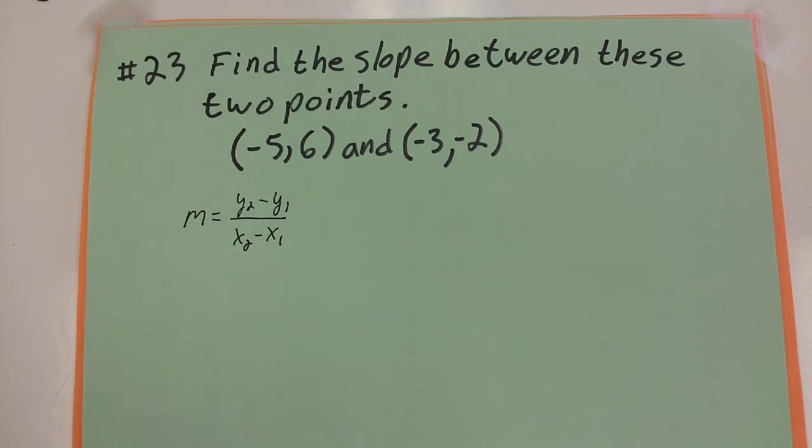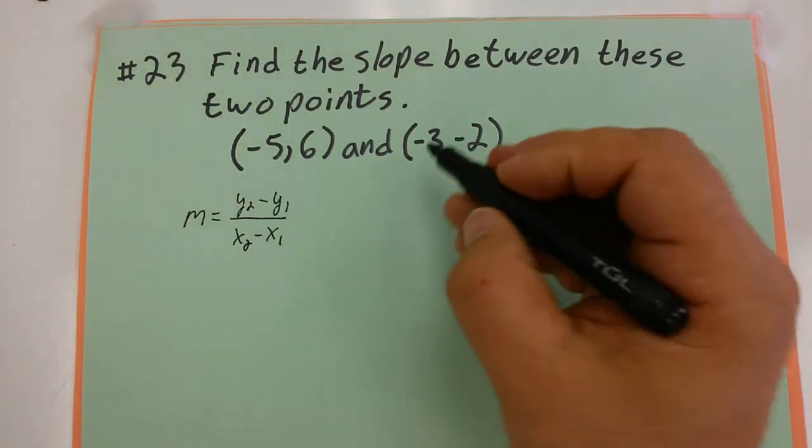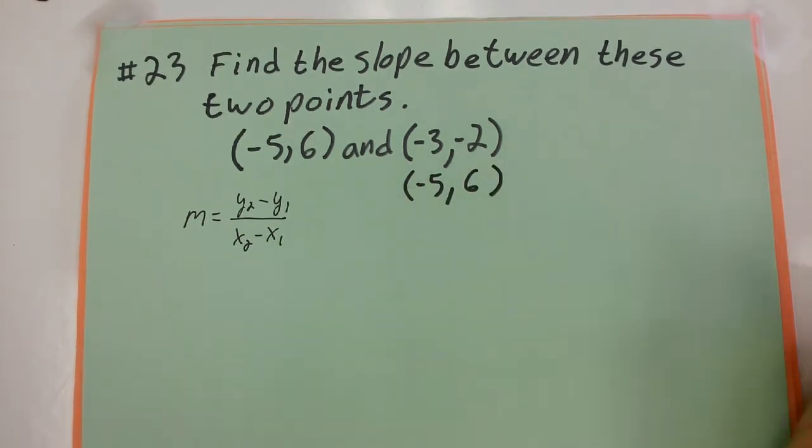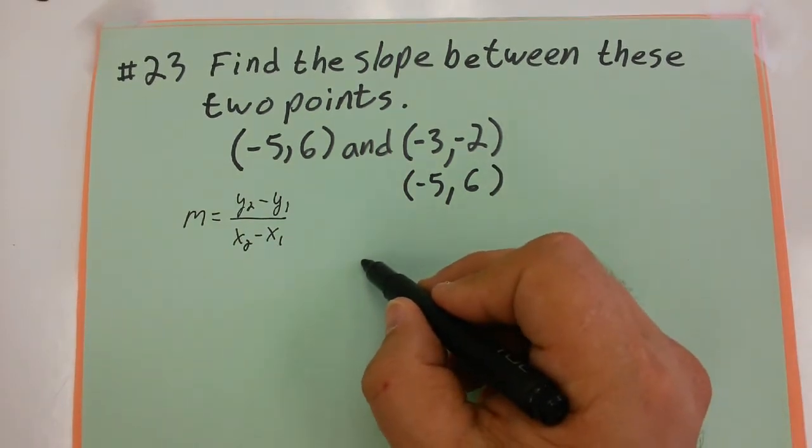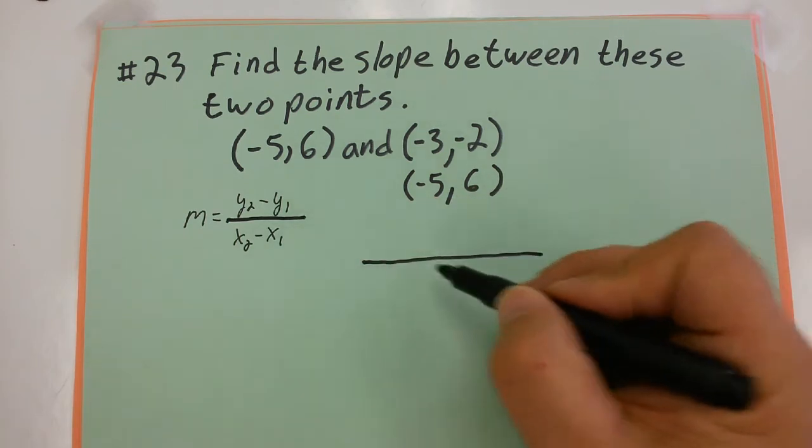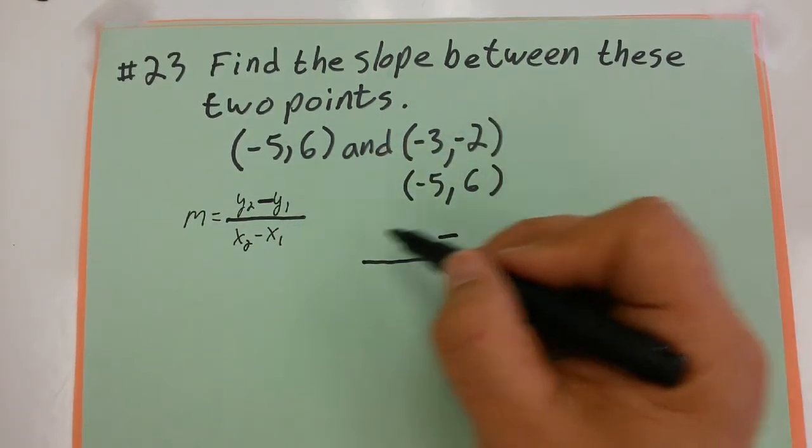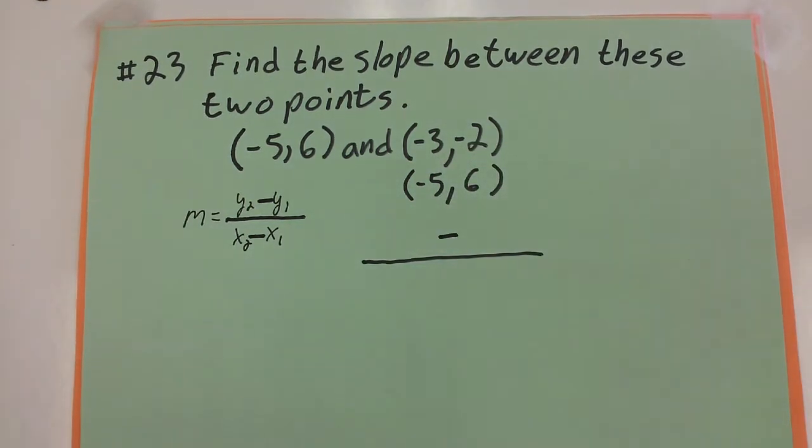So what I do to make it more convenient is I'll stack these. I'll take that negative 5, 6 and place it underneath the other coordinate, and I'm going to subtract them. I'm going to set up this template here, a division bar and then a minus sign between the two y's and a minus sign between the two x's. Now I'm just going to fill in the blanks.